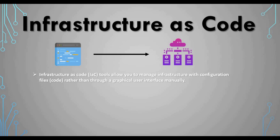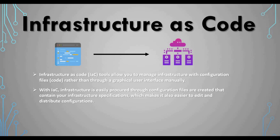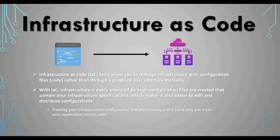Infrastructure as Code, also called IaC, is where IaC tools allow you to manage your infrastructure with configuration files or code rather than using a graphical user interface where you manually create your infrastructure — like logging into your cloud portal or clicking on VMware virtual machines. With IaC, infrastructures are easily provisioned through configuration files that contain the infrastructure specification, such as how much memory, whether it's a virtual machine, or whether it's on Azure or AWS.